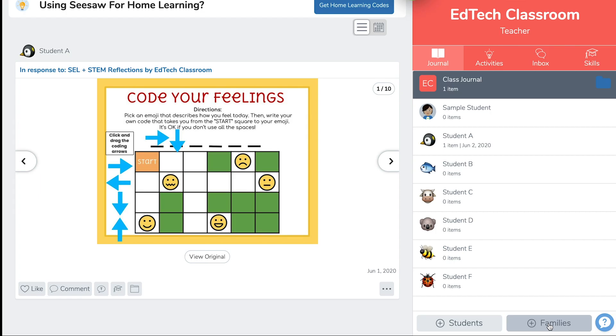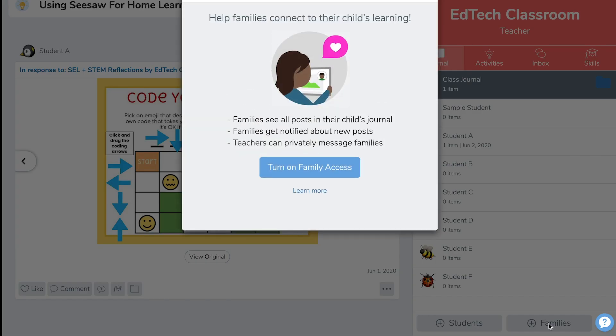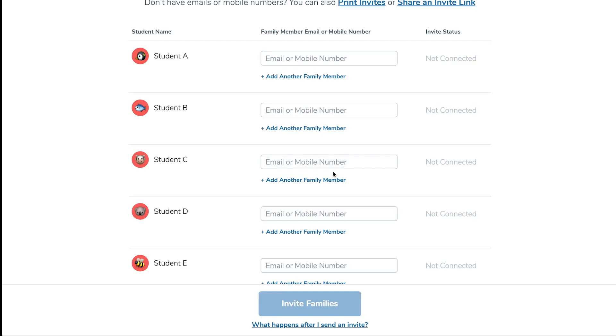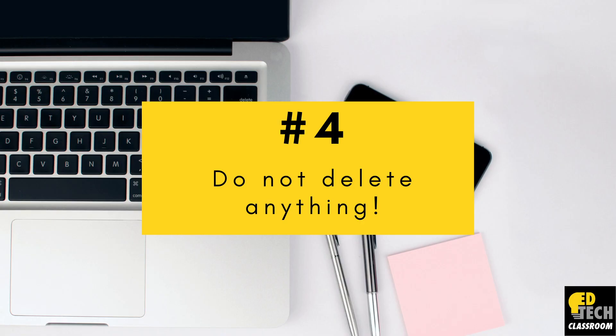To connect with families, click on the Plus Families button at the bottom of the screen, then click Turn On Family Access and follow the directions on the screen. Number four: do not delete your class, students, or journals. It is absolutely critical that you do not delete your class, your students, or their journals — always archive everything. If you do delete these three things, all student work and class activities will be deleted permanently, and Seesaw is unable to retrieve these deleted items. So when in doubt, always archive.